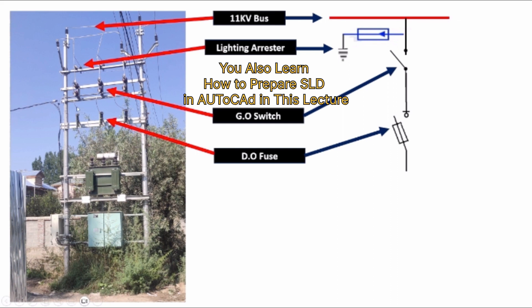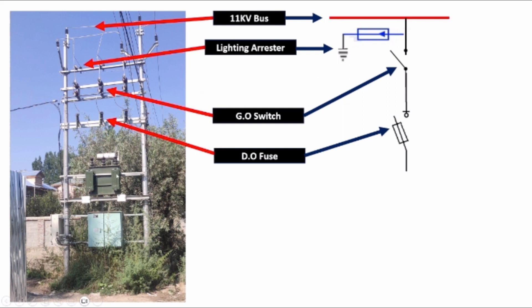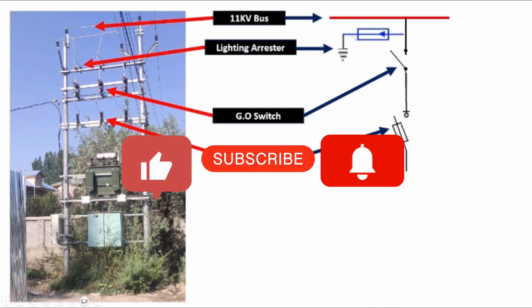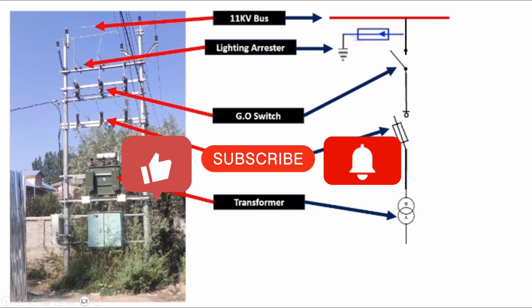From the dropout fuse, the connections are going to the distribution transformer. They are connected from the dropout fuse to the primary side of the distribution transformer. The primary side of the distribution transformer is delta connected and the secondary is star connected. So the symbol of this distribution transformer is like this.